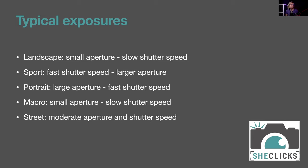With f/8 and 1/125s for street photography, you can set ISO manually or to auto and go wherever you want. The aperture gives enough depth of field to be forgiving with focus, but isn't so small that you need a long exposure — you can hand-hold and freeze someone walking. Things moving faster will show a bit of blur, which can work really well with street photography.